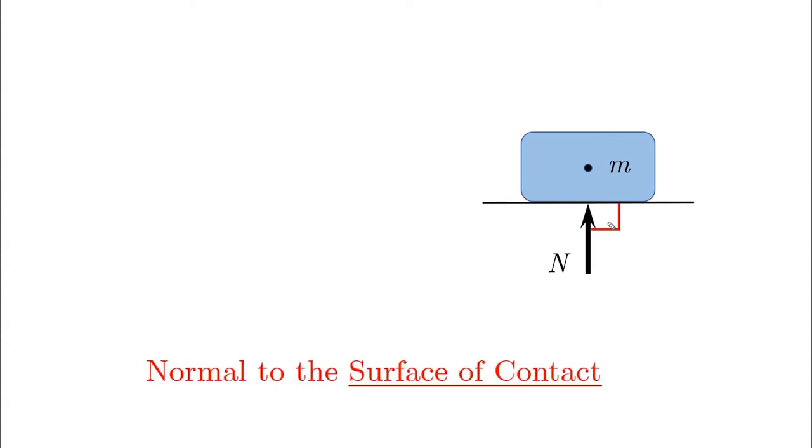If we have a mass resting on a horizontal surface, then the normal force is usually pointing this way. That's because the normal force is by definition normal to the surface of contact, or mathematically, perpendicular to the surface of contact.